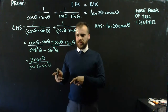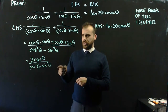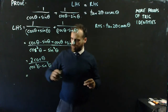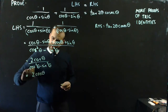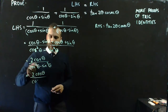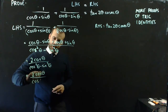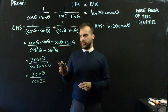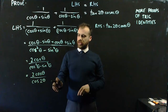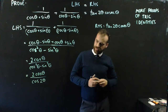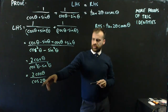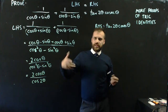Cos squared theta minus sine squared theta looks really familiar — some sort of double angle identity, perhaps? I referred to my formula sheet and it is the double angle identity for cosine, which is cos 2 theta. So I've taken this and moved it all the way down to 2 cos theta over cos 2 theta. If I expand that again I'd just end up going around in circles, so that looks like maybe it. We'll work on it some more in a minute.